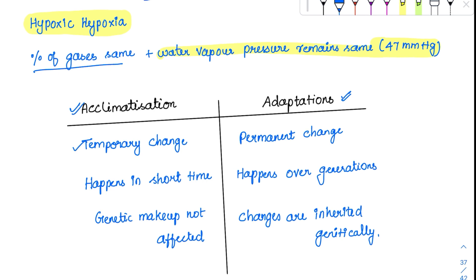Acclimatization is temporary change, while adaptation is permanent. Acclimatization happens in a short time, adaptation over generations. Genetic makeup is usually not affected in acclimatization, but changes are inherited genetically in adaptation. That's why mountaineers have genetic advantages in body stature and RBC count.